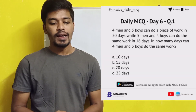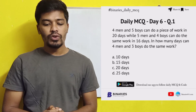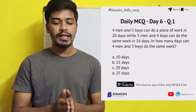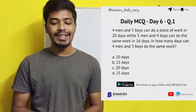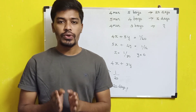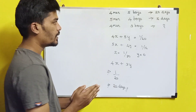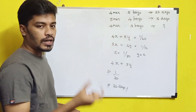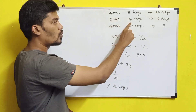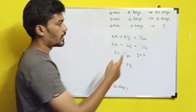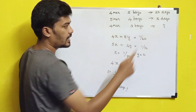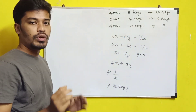Let's look at the first question. 4 men and 5 boys can do a piece of work in 20 days, while 5 men and 4 boys can do the same work in 16 days. In how many days can 4 men and 3 boys do the same work?